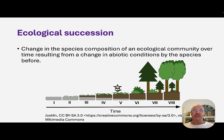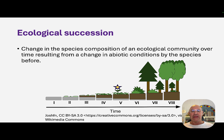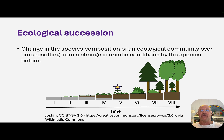Ecological succession is basically a change in the species composition of an ecological community over time — a long period of time. It results from a change in the abiotic conditions brought about by the species before; in other words, species improve the conditions for the species that come after. Succession is a continued maturity of an ecosystem until we get a mature, stable climax community.